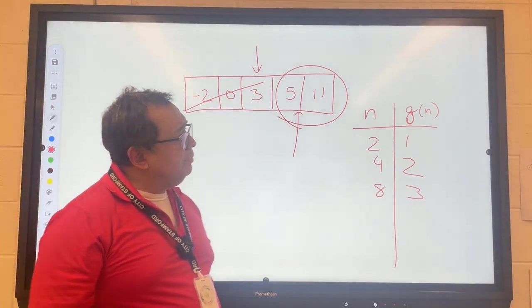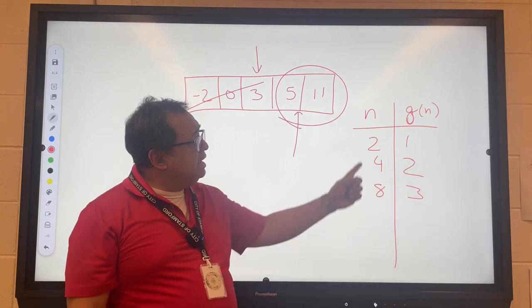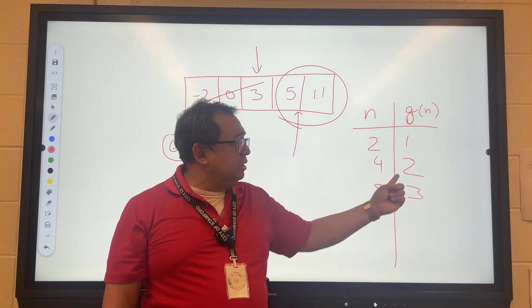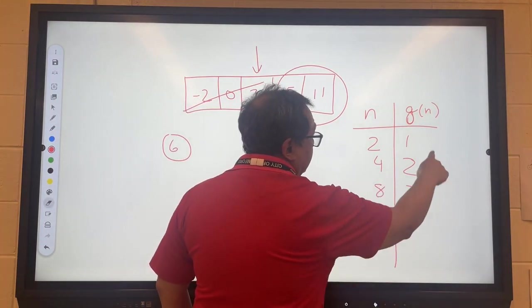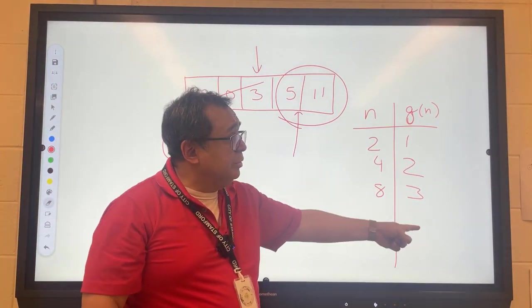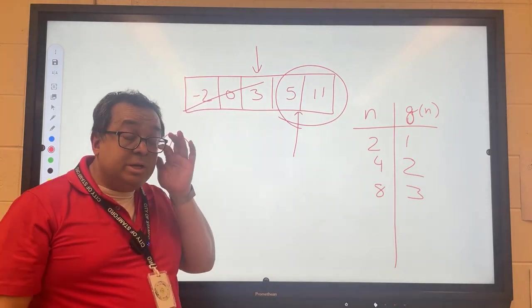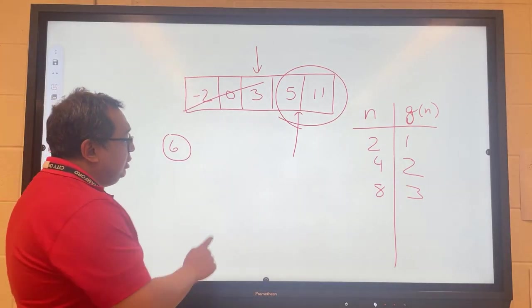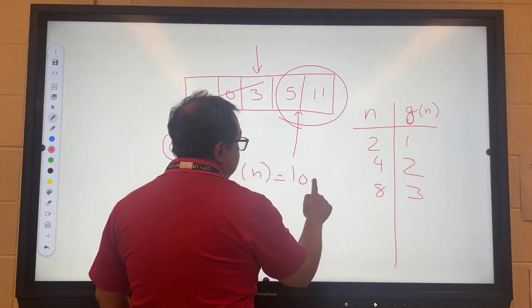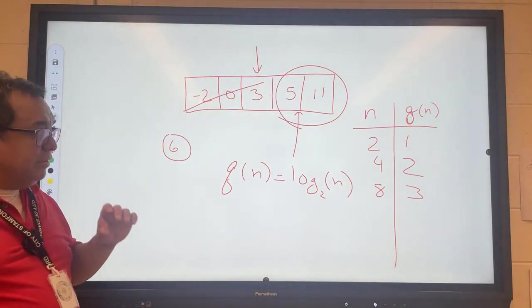I would like you to get together with your partner and tell me what is this function Q of n. If I say n, how can you calculate Q of n? What mathematical function is this? Here's the n row and here is the Q of n row. These are the inputs, these are the outputs, the independent variables, and I want to know what the function is. Q of n is equal to log base 2 of n.